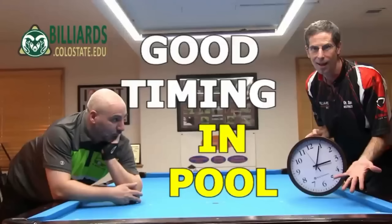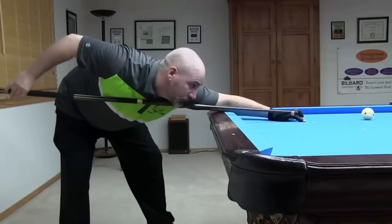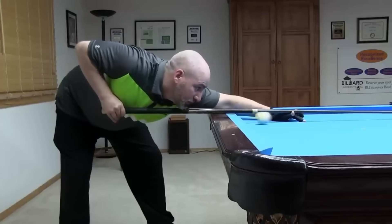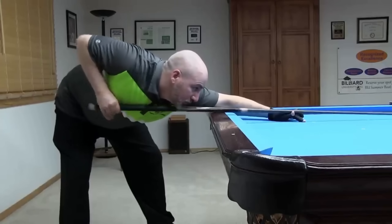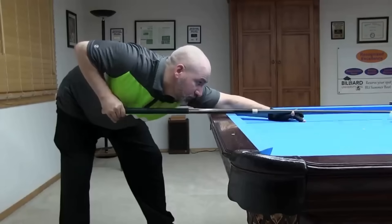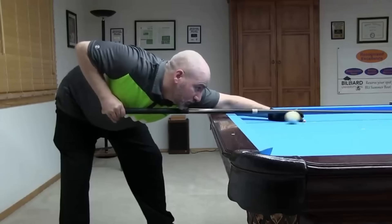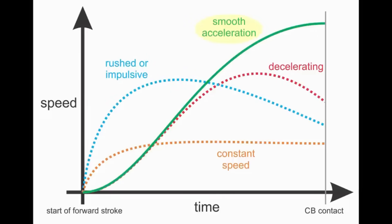Here's an excerpt from a past video of mine that explains the important aspects of good stroke timing. A stroke with good timing has a slow backswing, a non-rushed transition between the back and forward swings, smooth acceleration forward, and no slowing before cue ball contact.